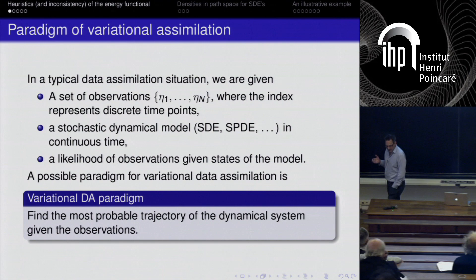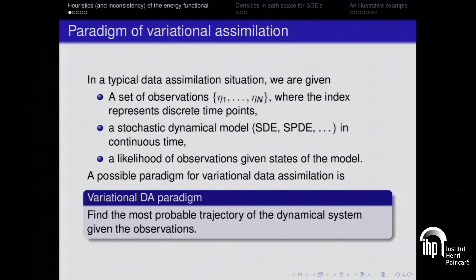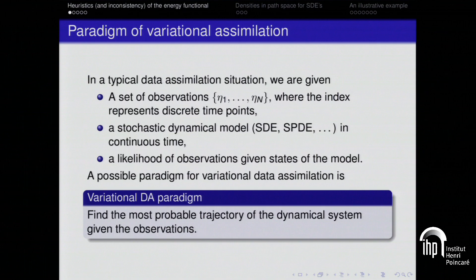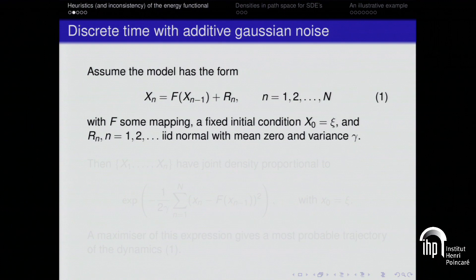Because the point I want to make mainly concerns the dynamical error rather than the observational error, I will not talk about observations at all in this talk. I will do data assimilation even when I have no observations at all. I will show you it still makes sense to address the question: what is the most probable trajectory of a stochastic dynamical system? With observations, you simply add the observation error back into the cost function we discuss here.